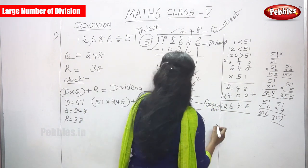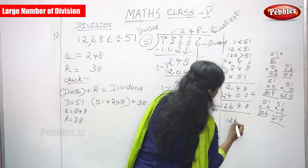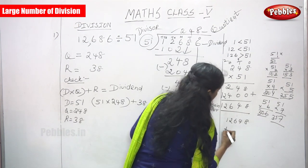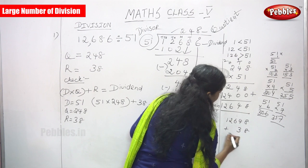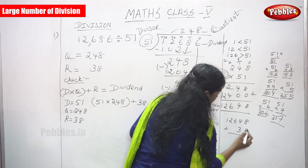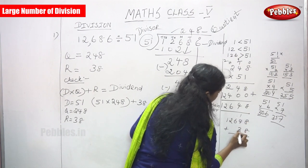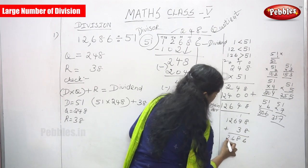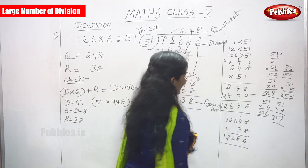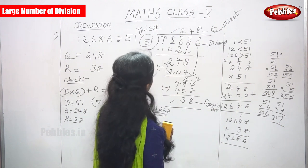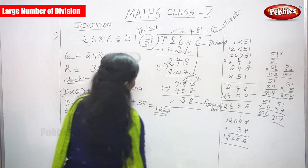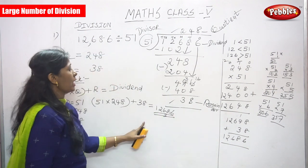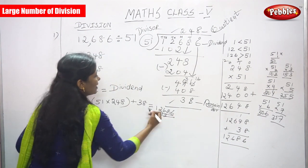Now add 12,648 plus the remainder 38. 8 plus 8 = 16, write 6 carry 1. 4 plus 1 = 5, plus 3 = 8. 6 remains, 2 remains, 1 remains. The result is 12,686. This matches the original dividend, so the answer is perfectly correct.